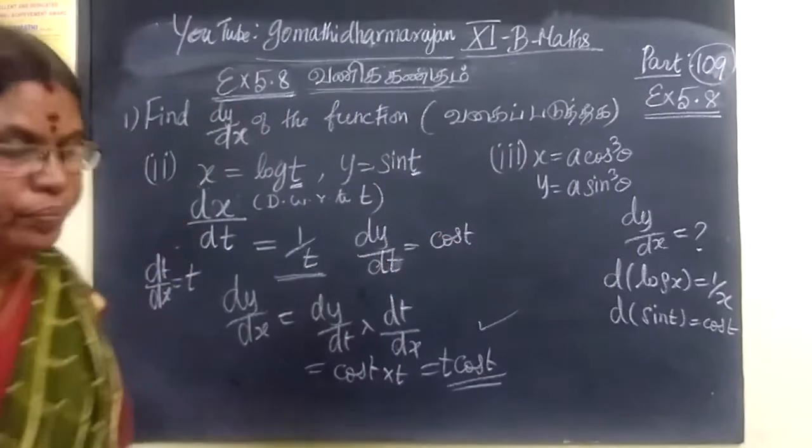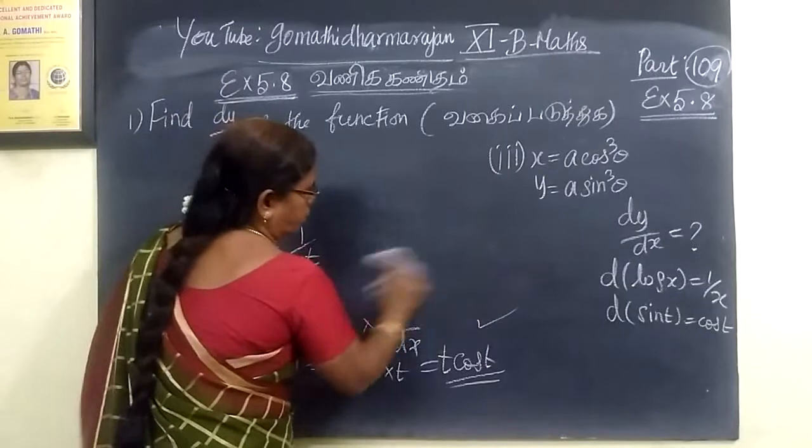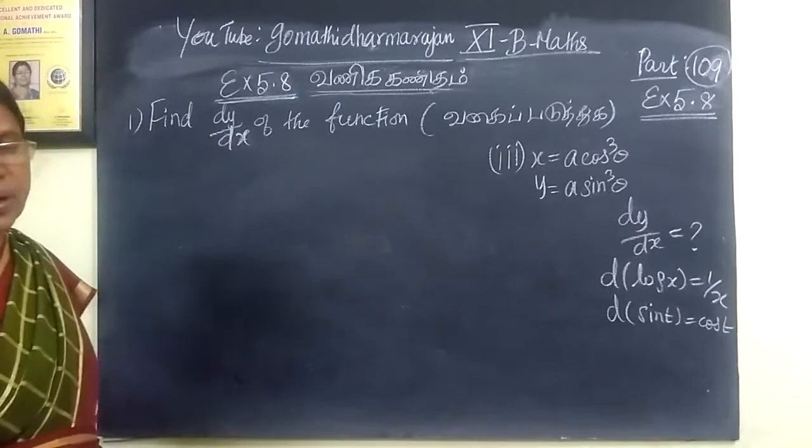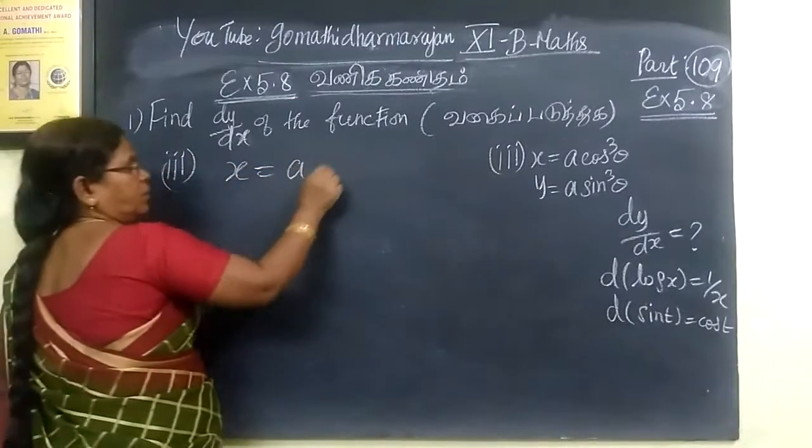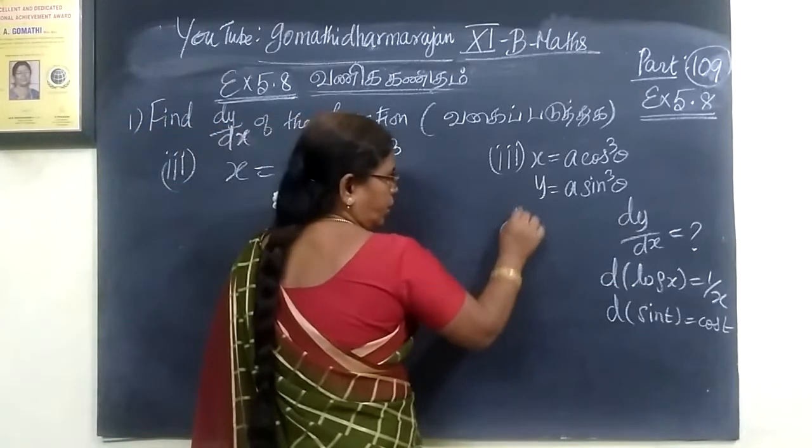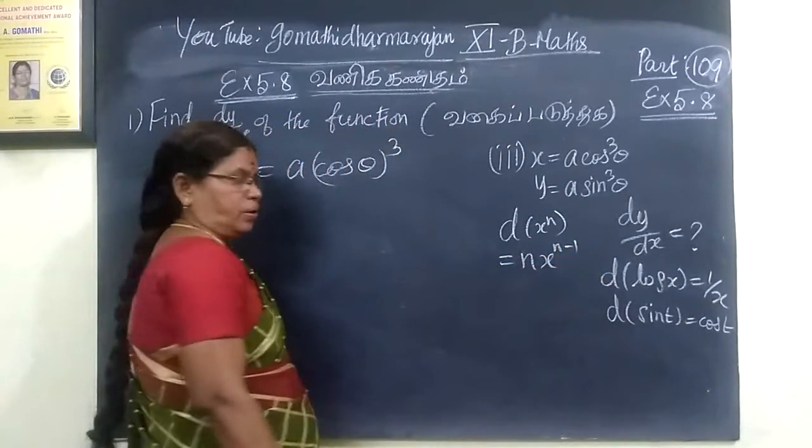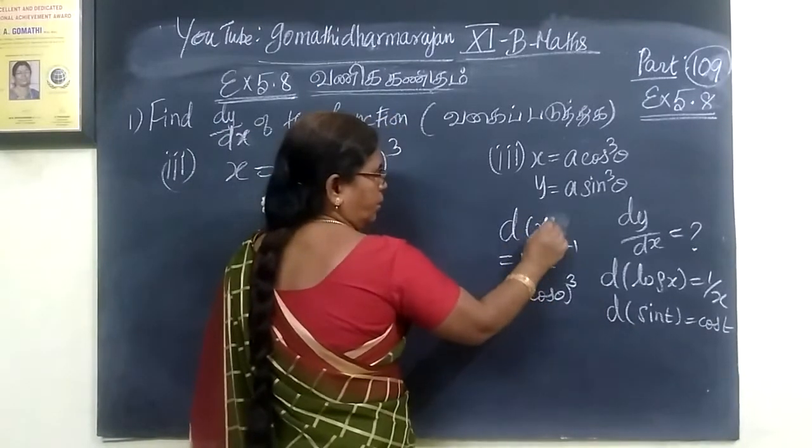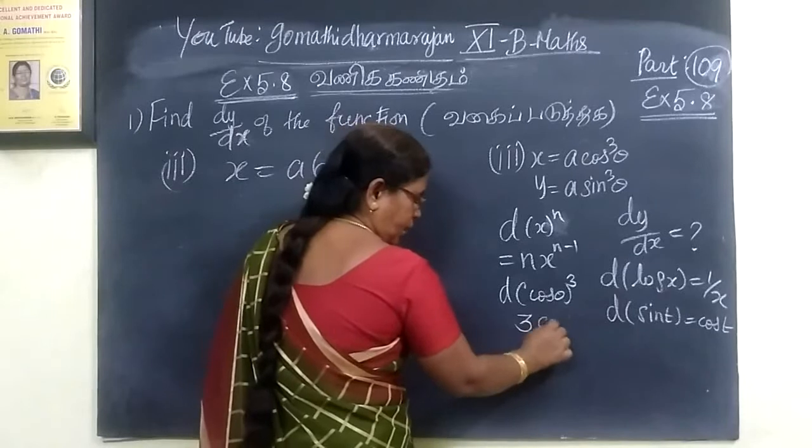The next one is easy in Business Maths. It is so easy. This one is easy in the general maths. The Business Maths is here. Then power 1, x equal to a cos cube θ. Previous one. You know d of x power n equal to n times x power n minus 1. Differentiation of cos cube θ.